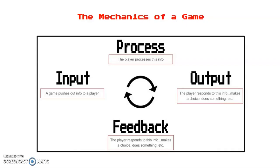I made a graph to help visualize this process. We start with input — the game pushes out info to the player. The player processes this info and decides what to do. Then the player gives output — a response to the game by making a choice or doing something. The player then gets feedback based on their action: either something good happens or something bad happens, and then this process just keeps repeating over and over again.